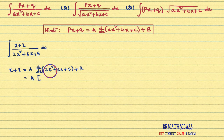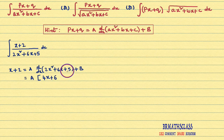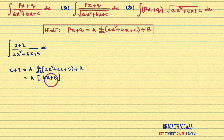Now I'll differentiate this expression. The derivative of 2x² is 4x. The derivative of 6x is 6. The derivative of 5 is 0. So the derivative of 2x²+6x+5 is 4x+6.